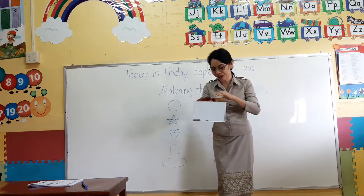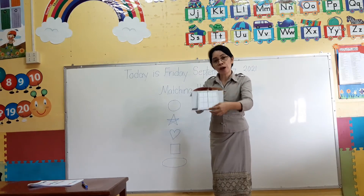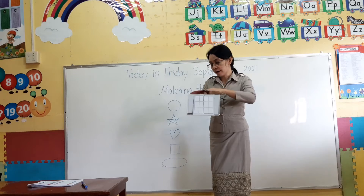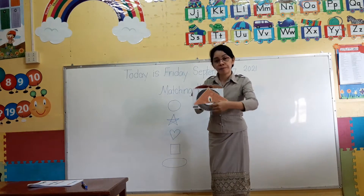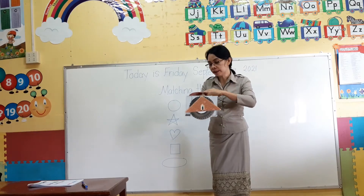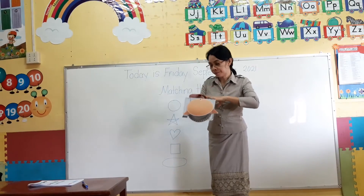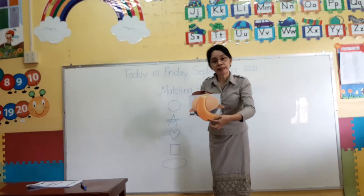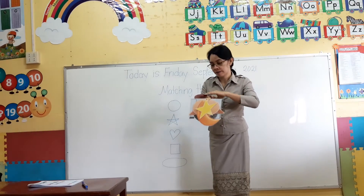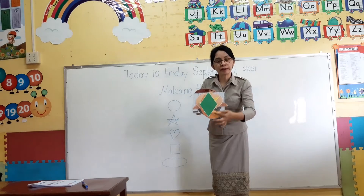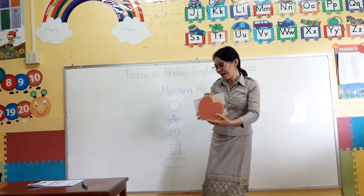Very good. Say it again: rectangle, square, circle, triangle, oval, crescent, star, diamond, heart.